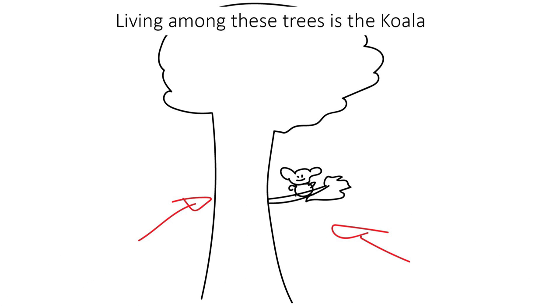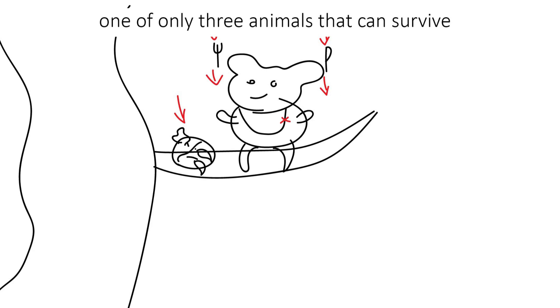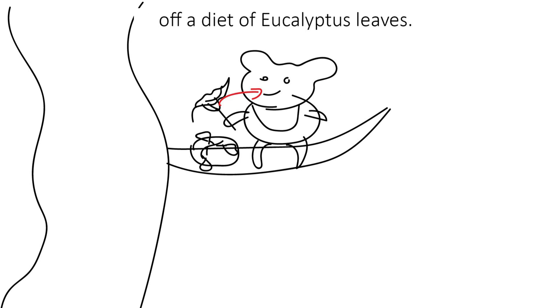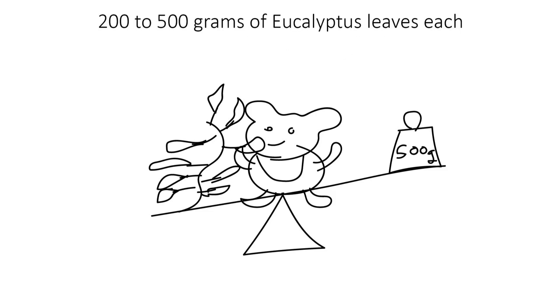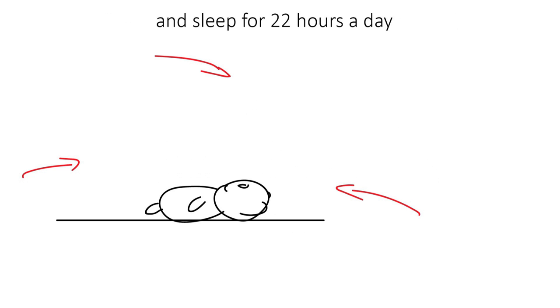Living among these trees is the koala, one of only three animals that can survive off a diet of eucalyptus leaves. Koalas consume 200 to 500 grams of eucalyptus leaves each and sleep for 22 hours a day.